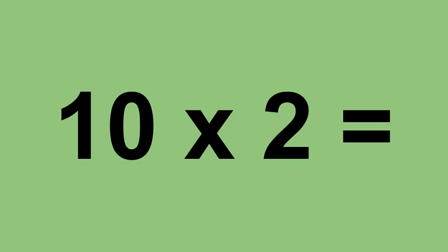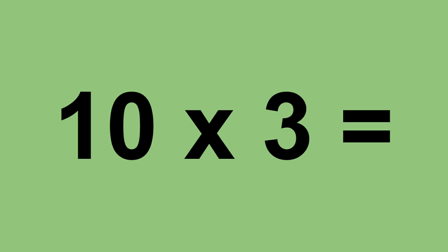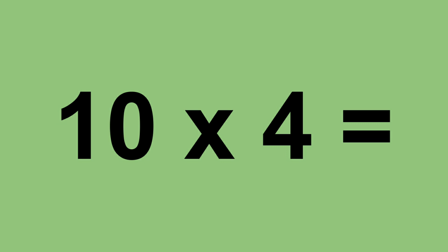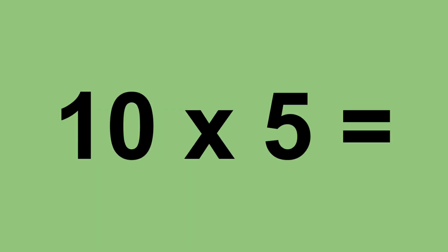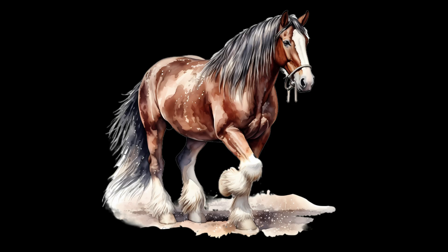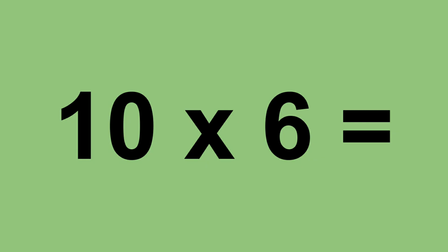10 times 2 equals 20. 10 times 3 equals 30. 10 times 4 equals 40. 10 times 5 equals 50.